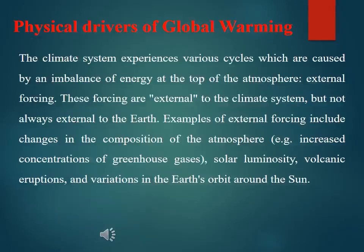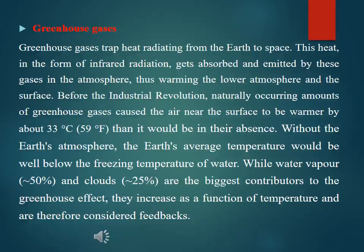The climate system experiences various cycles caused by an imbalance of energy at the top of the atmosphere, known as external forcing. These forcing are external to the climate system but not always external to the Earth. Examples of external forcing include changes in the composition of the atmosphere, for example increased concentration of greenhouse gases, solar luminosity, volcanic eruptions, and variation in the Earth's orbit around the Sun.